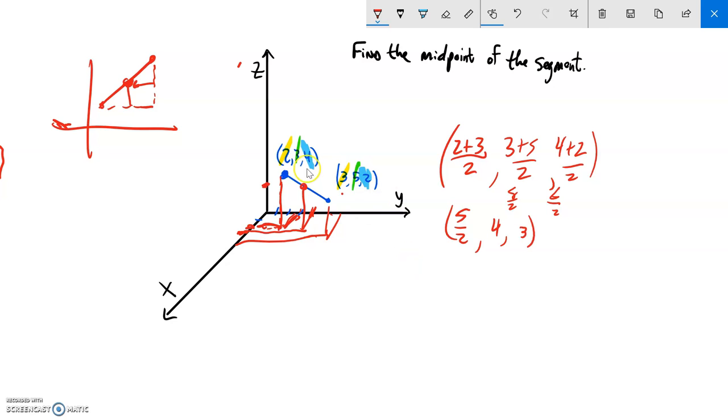So again, notice what I'm doing is I'm taking this two, oops I wrote three, taking this two and this three and I'm averaging them. What's right in the middle between them, and it's five halves. That's two and a half. Or with the y values I'm looking at the three and the five.